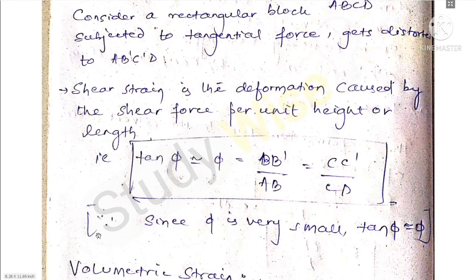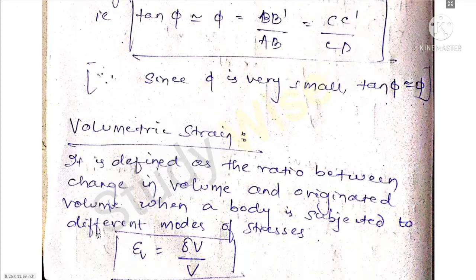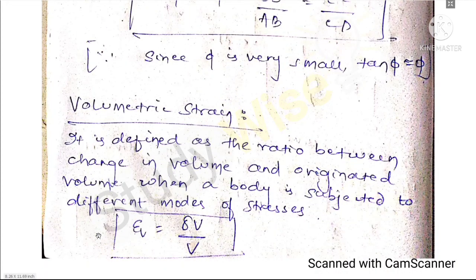Since φ is very small, tan φ is taken as φ. Volumetric strain is defined as the ratio between change in volume and original volume when a body is subjected to different modes of stress. Volumetric strain (eᵥ) equals change in volume upon original volume.